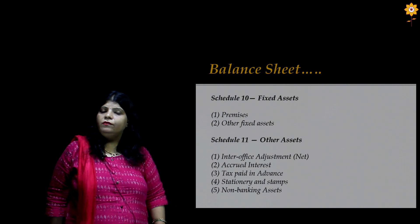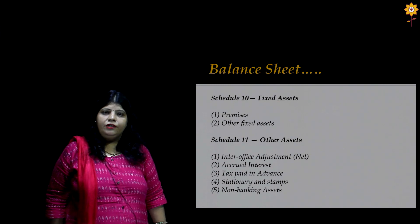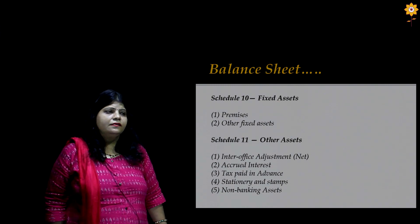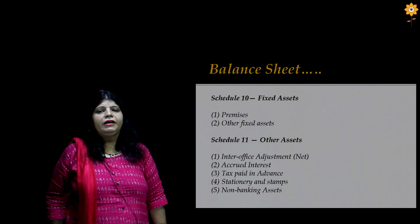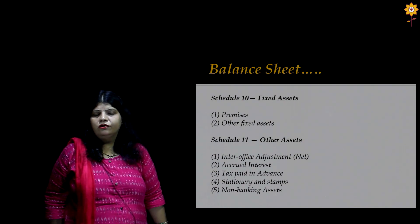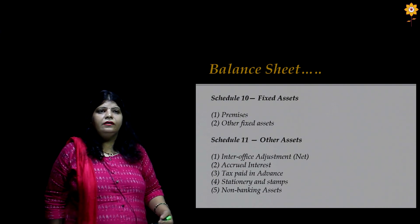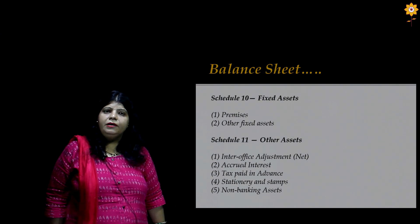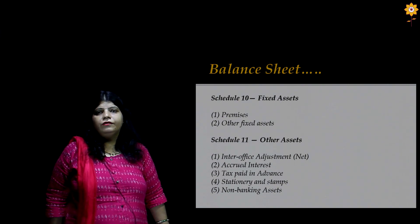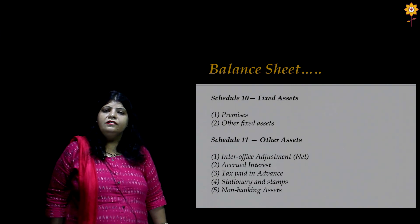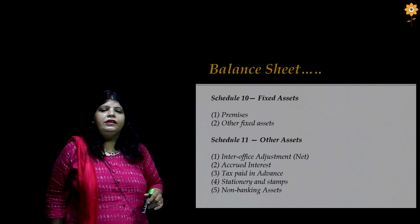Schedule 10 covers fixed assets, with two major classifications: premises and other assets. Schedule 11 covers other assets, which includes inter-office adjustment, interest accrued, non-banking assets accepted in satisfaction of claims, and stationery and stamps. To revise, inter-office adjustment is nothing but the unadjusted balance between the branches of the bank during the closure of the year, and if it has a debit balance, it is recorded on the asset side of the balance sheet.